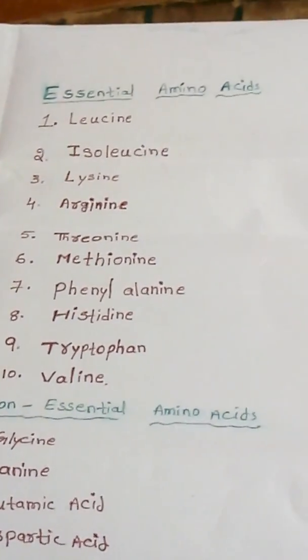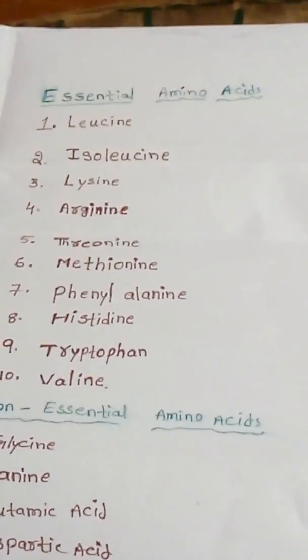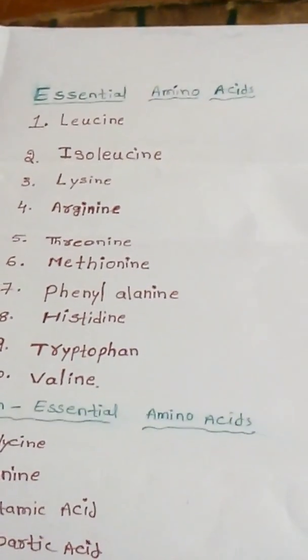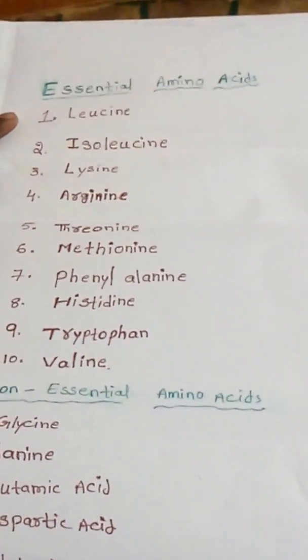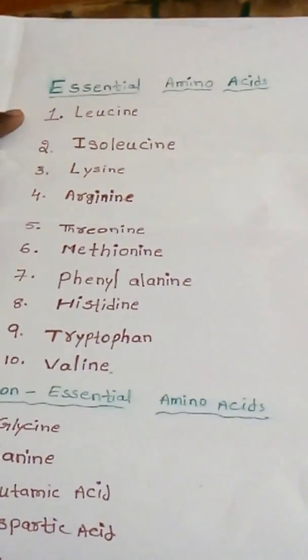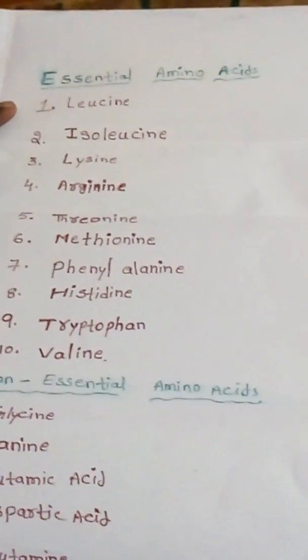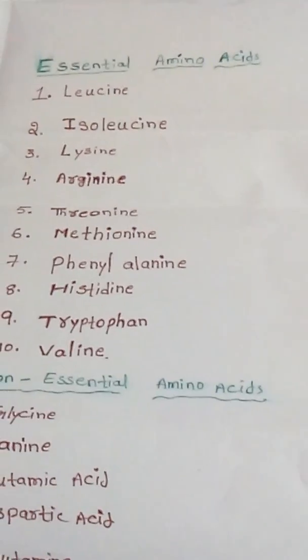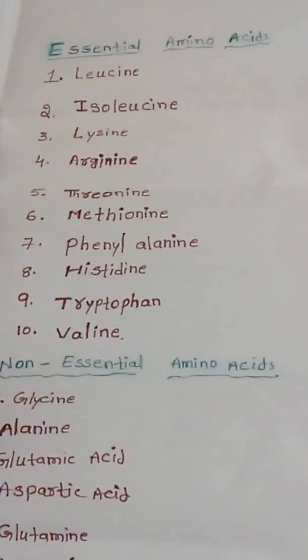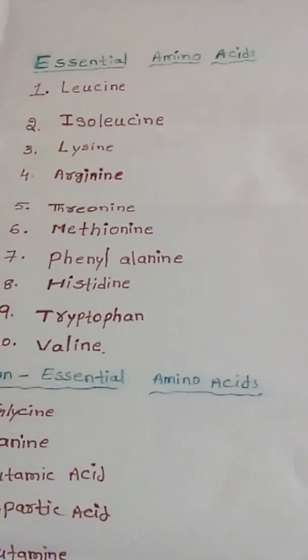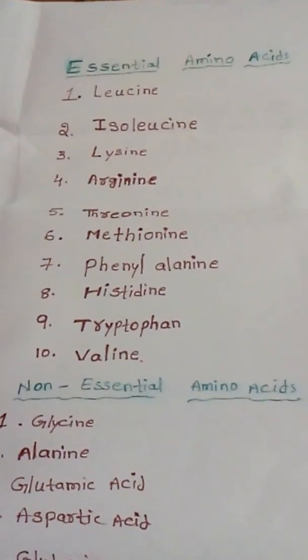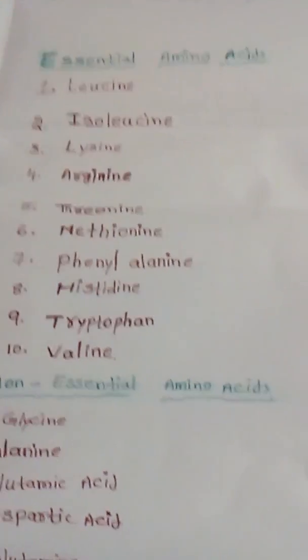In this video, we will learn a trick to remember the essential and non-essential amino acids. Essential amino acids are the amino acids which cannot be synthesized by our body, so we have to take them through our food. The amino acids which can be synthesized by our body and need not be taken through food are known as non-essential amino acids.